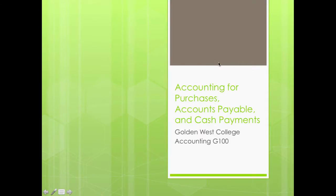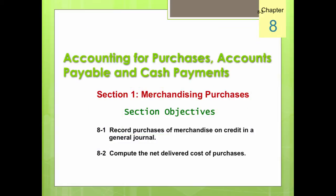Welcome back. In this chapter we will cover the accounting for purchases, accounts payable, and cash payments. This chapter shows how a merchandiser manages its purchases of goods for resale and its accounts payable. The learning objectives for section 1 are to record purchases of merchandise on credit in a general journal and to compute the net delivered cost of purchases.